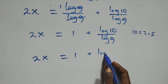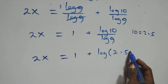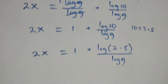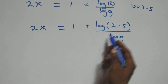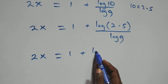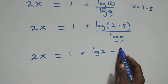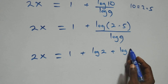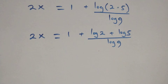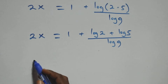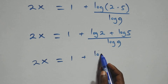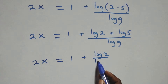Applying the log product rule again, we separate this into two fractions: 2x equals to 1 plus log 2 over log 9 plus log 5 over log 9.